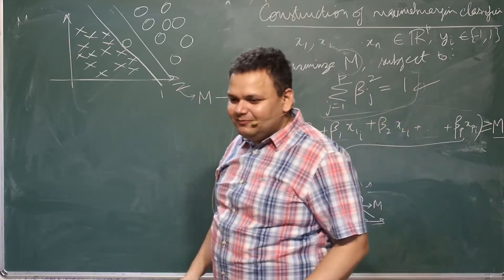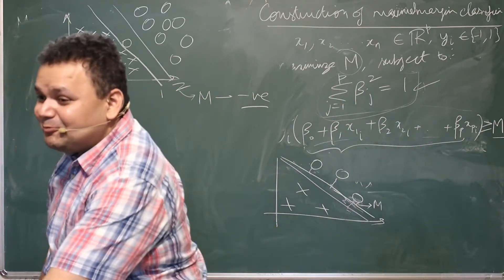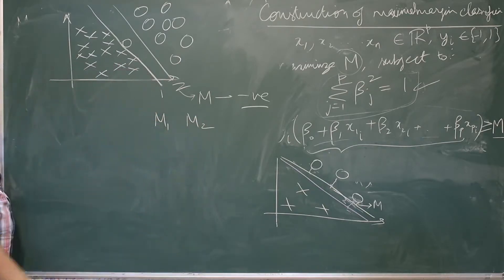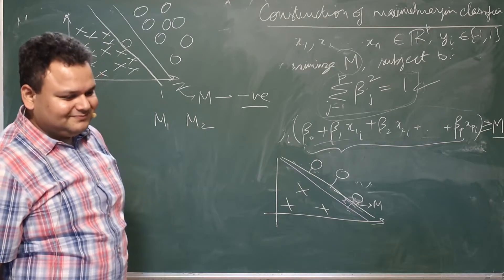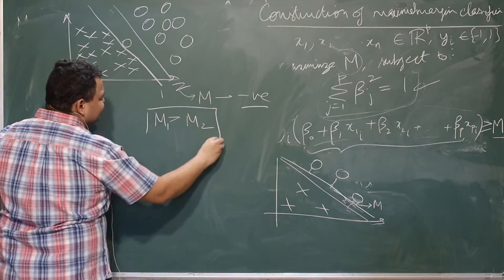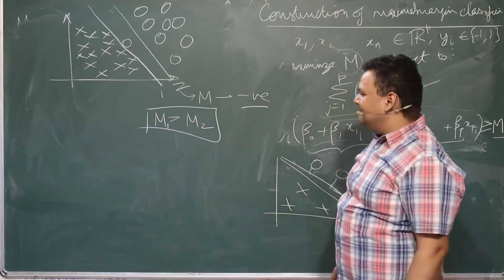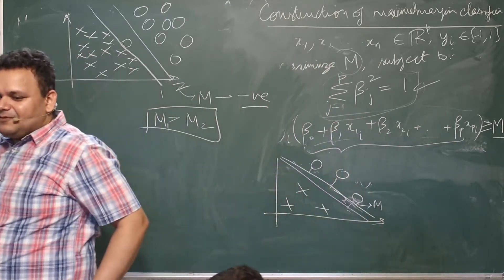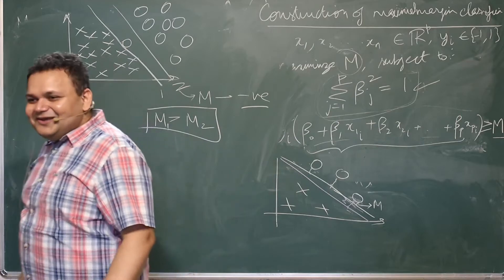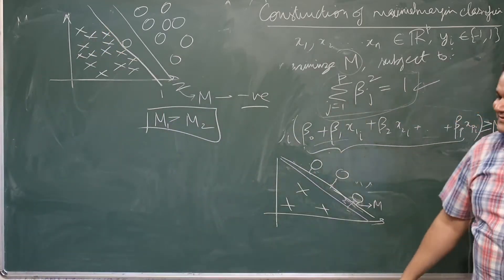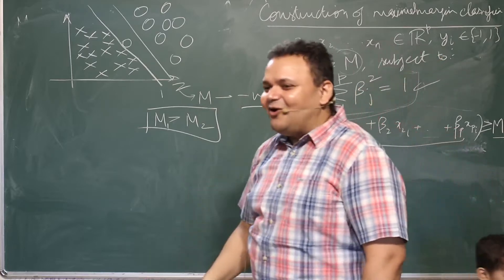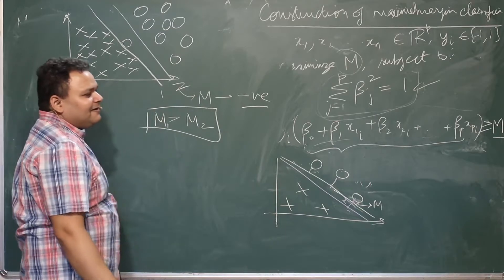M for line one will be a very small but positive value — close to zero. So which of the two M's is higher? M₁ will be greater than M₂. So the maximal margin classifier will choose line one — hyperplane one. But forget about what the maximal margin classifier says — what do you think is more reasonable?